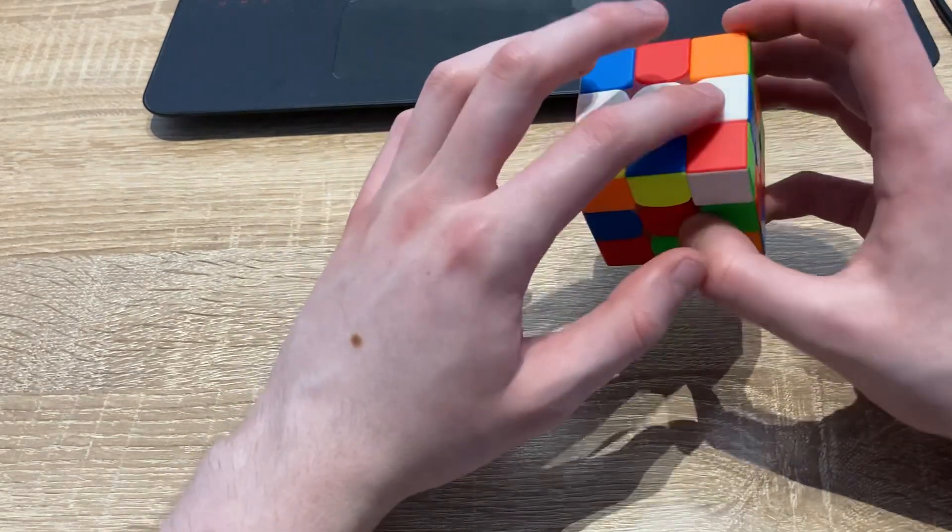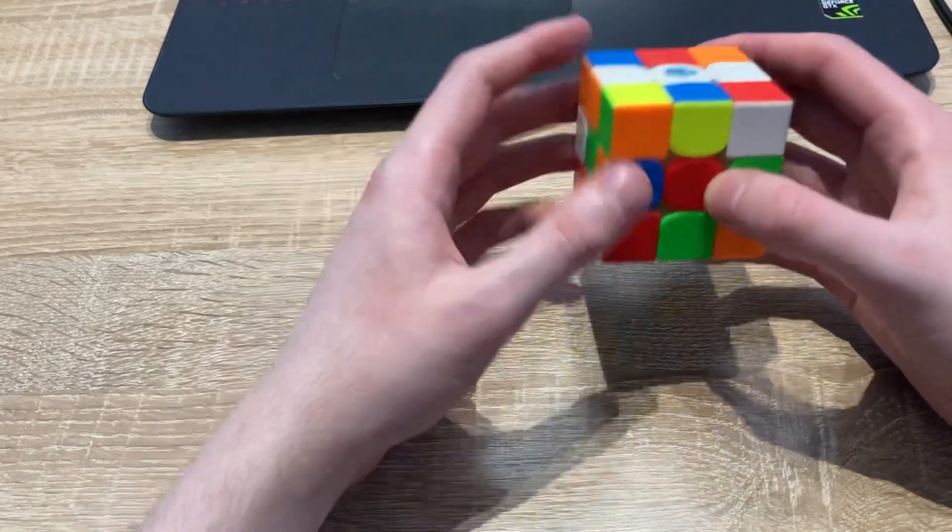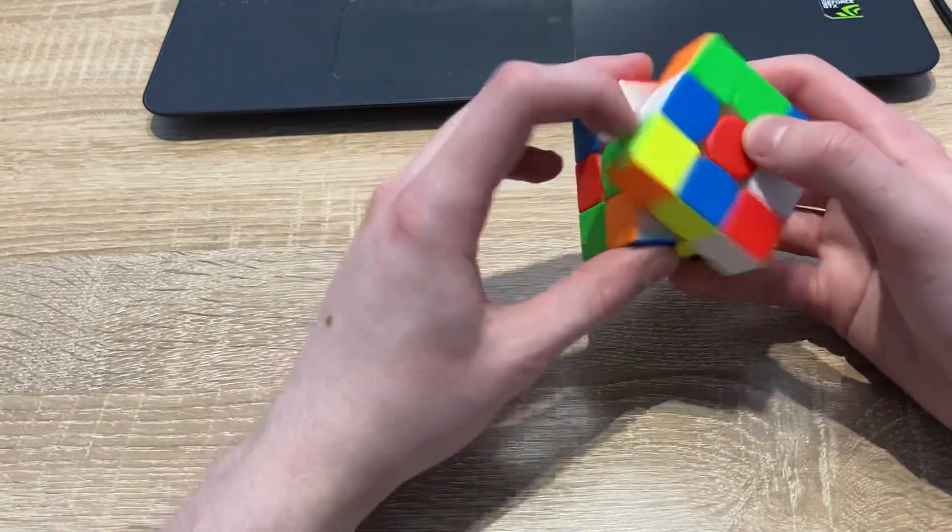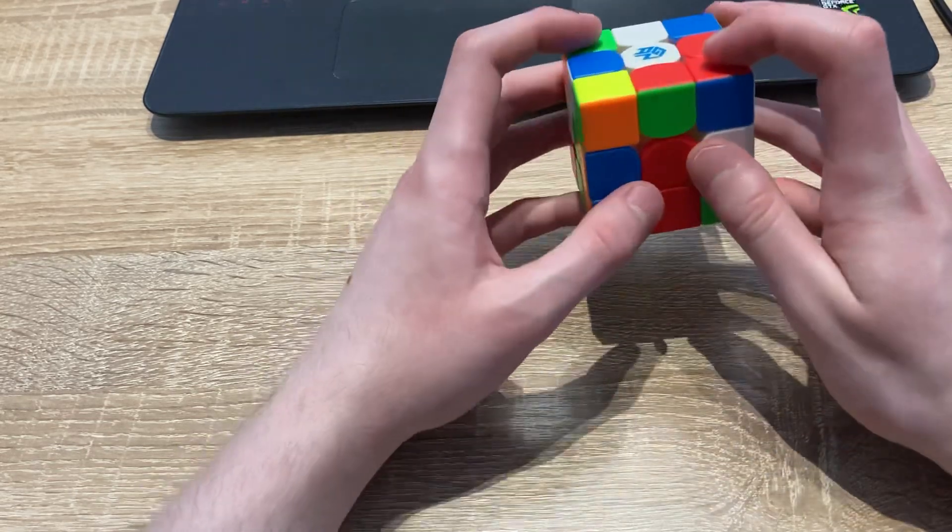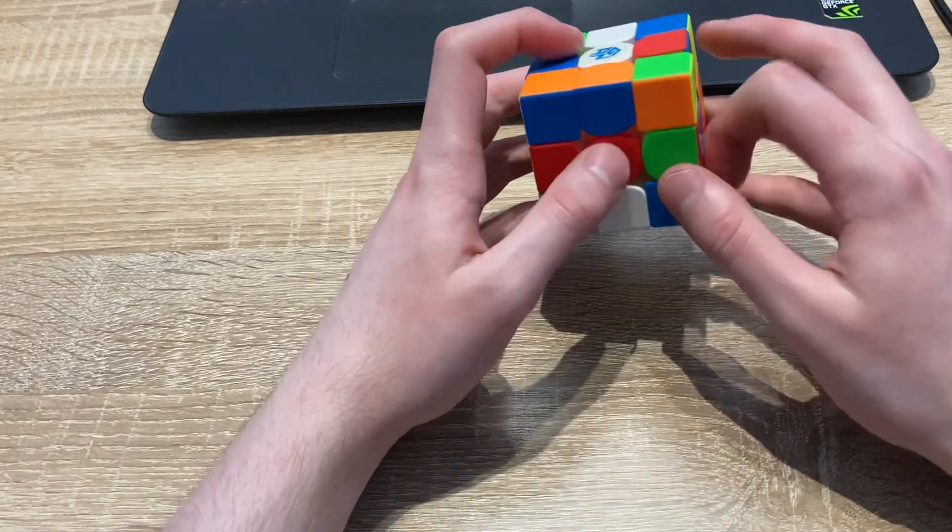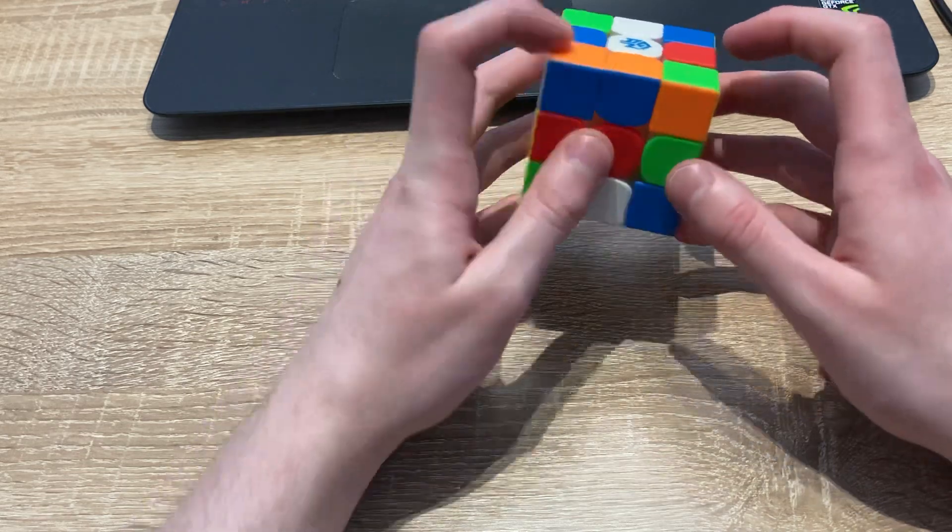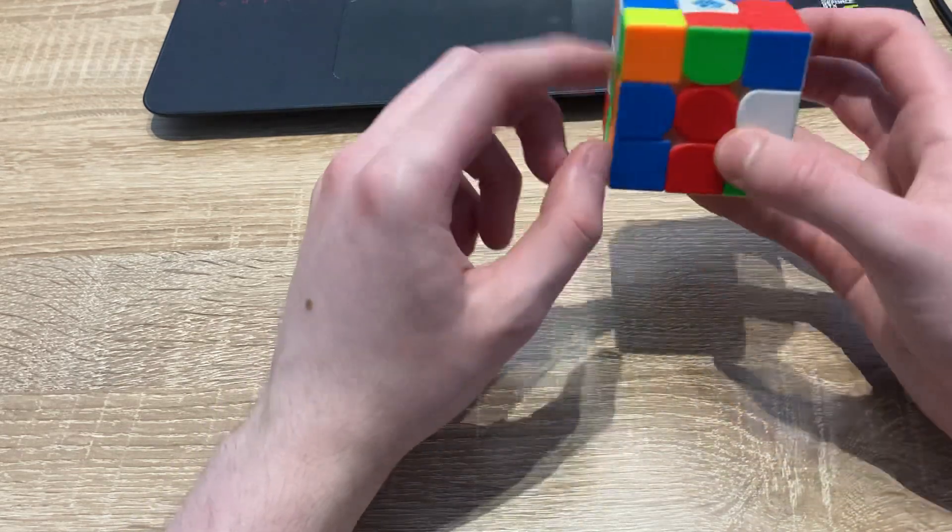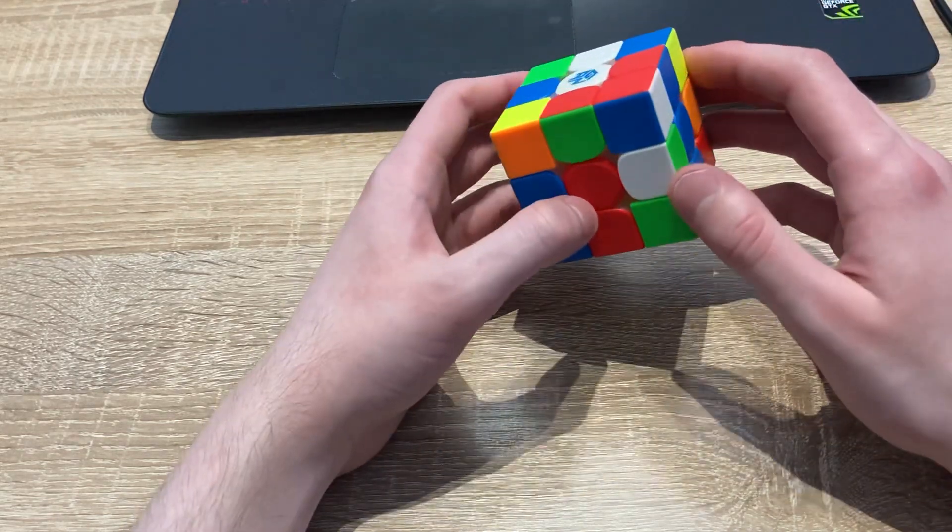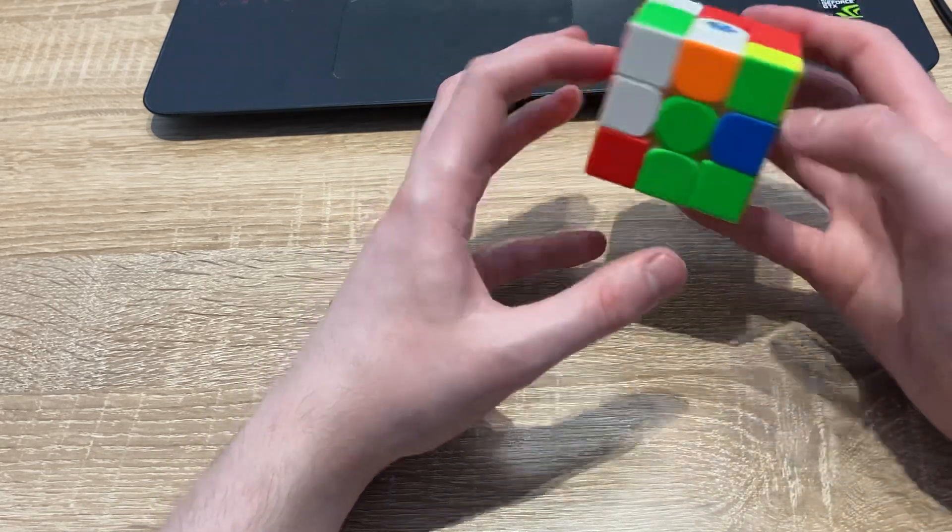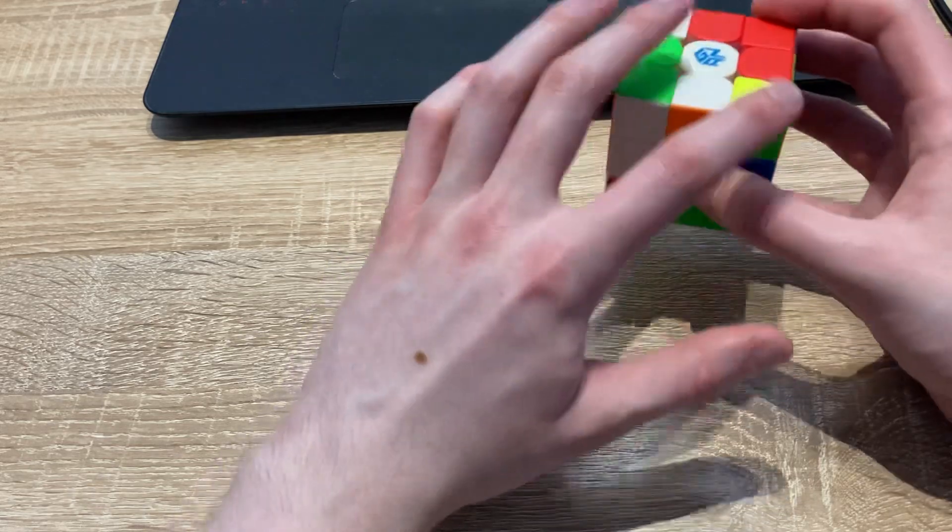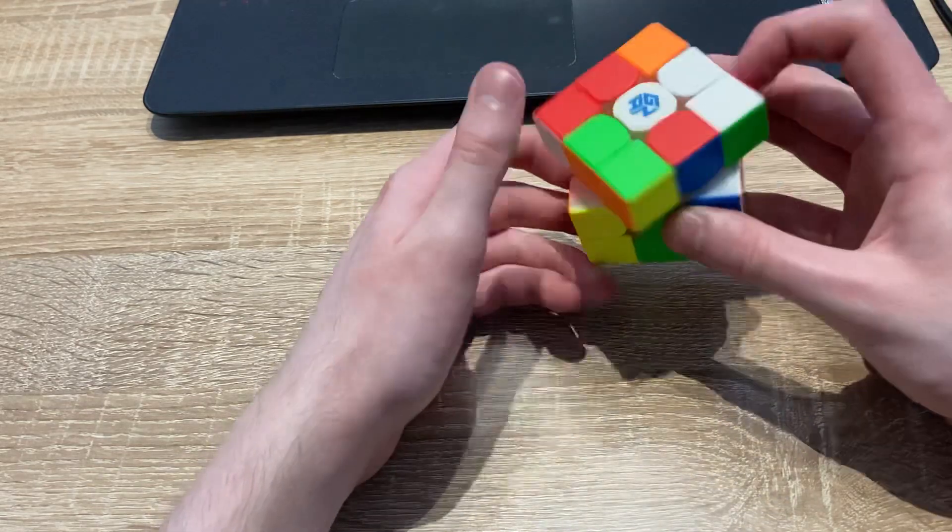And this edge is going to stay in the same position. And now I have this pair, which is actually an F-sledge-F' case. So the corner is here and the edge is here, and I can use an F, insert, F'. My next pair would be this one, which I would solve like that.